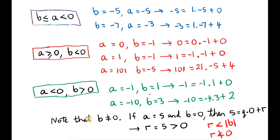Here are some more examples. I just want to mention that if b is 0, then we get into trouble. If we take the example where a is 5 and b is 0, and try to write 5 as qb plus r, we end up getting that r equals 5. But remember, r has to be less than the magnitude of b. If b is 0, the magnitude of 0 is 0, and since r is non-negative, r cannot be less than 0. So for that reason, we cannot have b equal to 0.